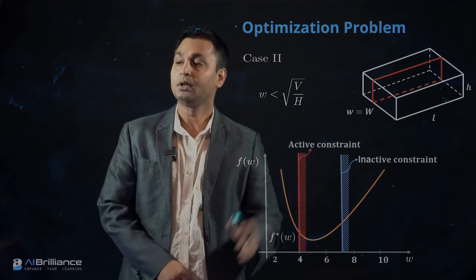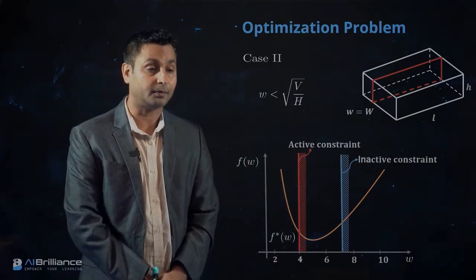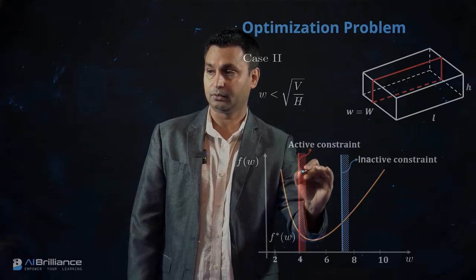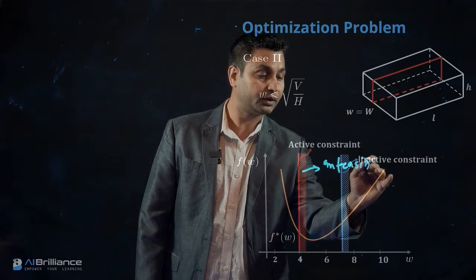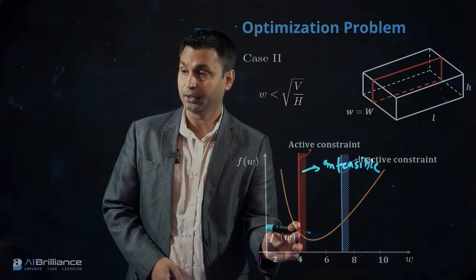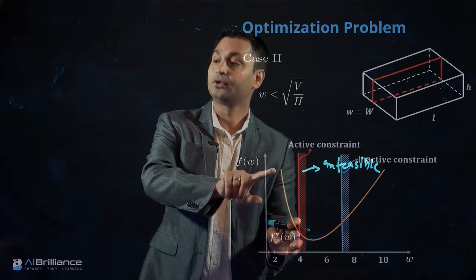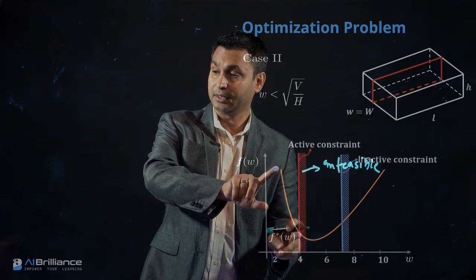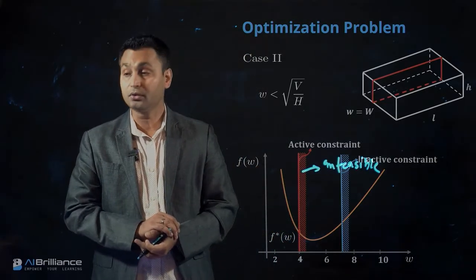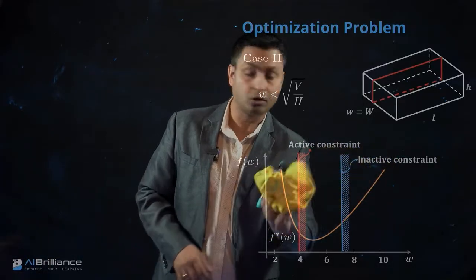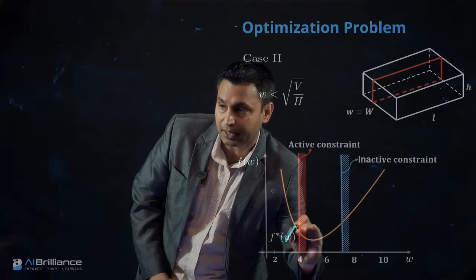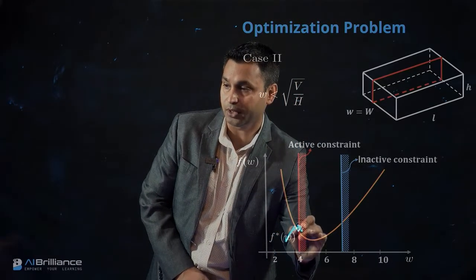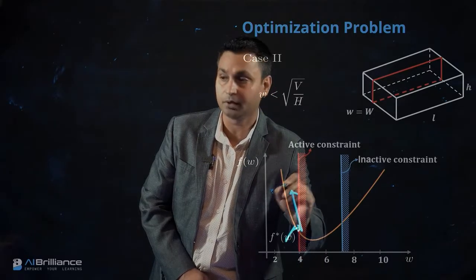With this new constraint, everything on the right-hand side of the red line becomes infeasible, so the only feasible region is from this point up to the red line. We have to find the optimal solution within this feasible region. Looking at the function in this range, the location of the optimal point is right where this line intersects with the curve itself. That intersection point gives us w-star for this case.